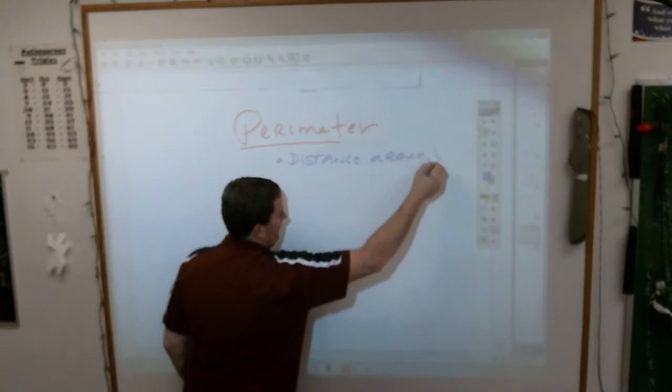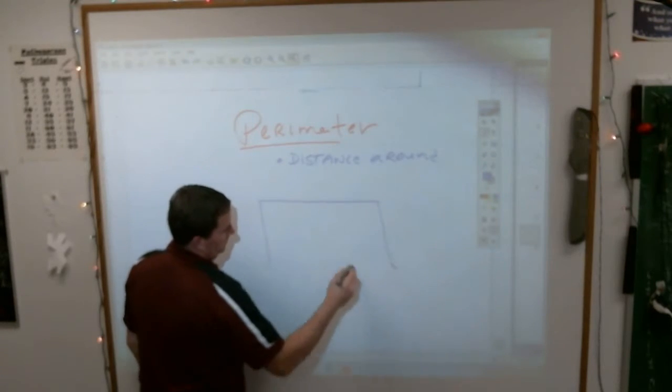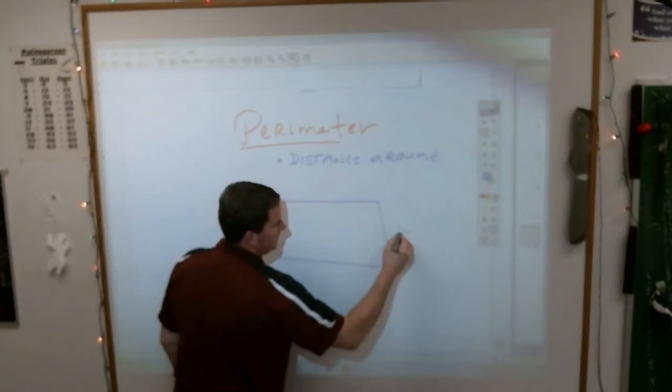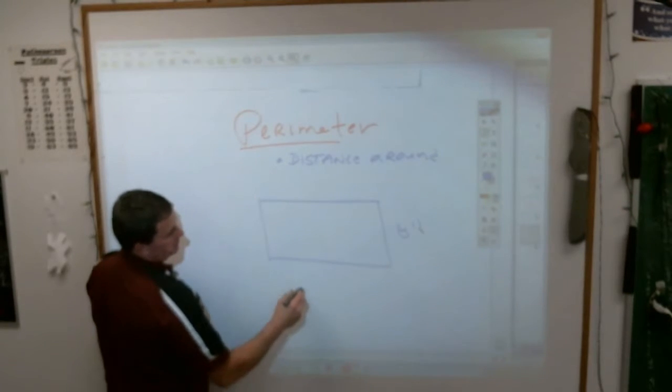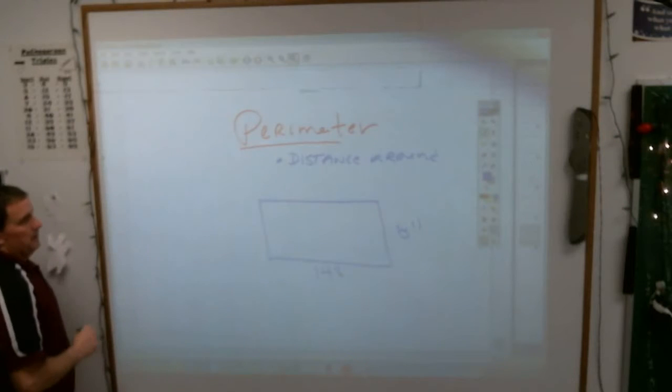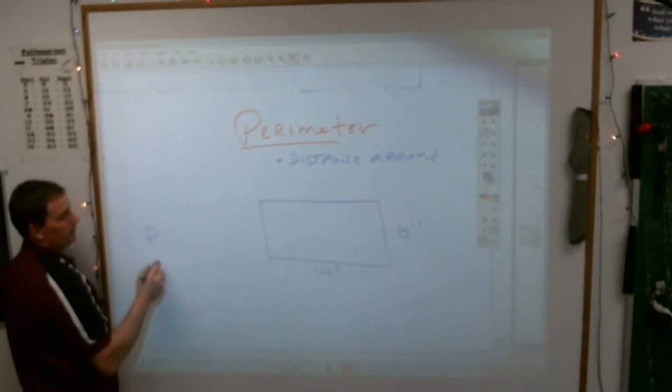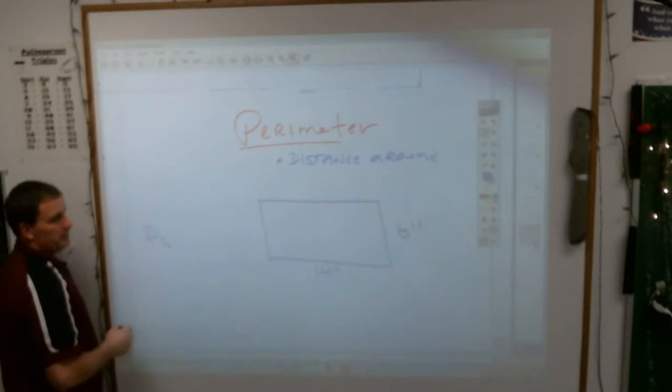So if you have a rectangle, and you know that rectangle is 8 inches by, let's say, 14 inches, to find its perimeter,